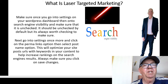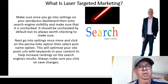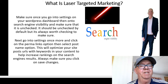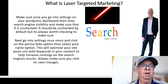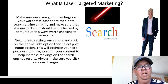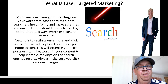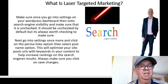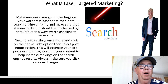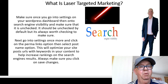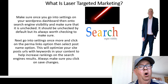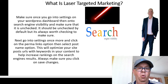Once you go into Settings on your WordPress dashboard, then go to Search and Visibility, make sure it is unchecked — it should be unchecked by default, but always worth verifying. Then go into Settings again and click on the Permalinks option, then select the Post Name option. This will optimize your site's post URLs with keywords in your content to help increase rankings on search engine results. Always make sure you click Save when doing this.